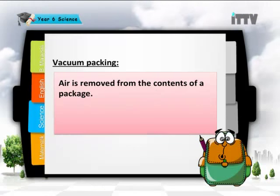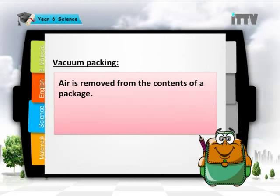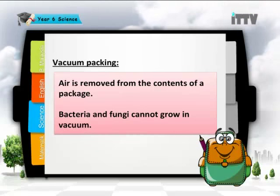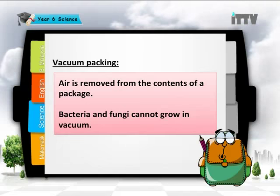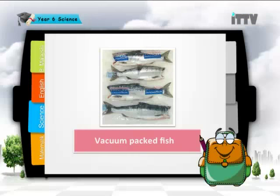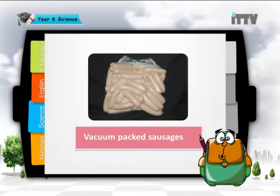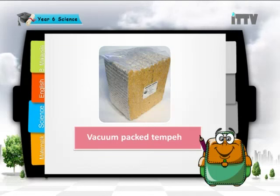In vacuum packing, air is removed from the contents of a package. The absence of air inhibits bacteria and fungi from growing, because there is no air for them. Bacteria and fungi cannot grow in a vacuum or absence of air. Examples of vacuum packed food include vacuum packed fish, vacuum packed sausages, and vacuum packed tempeh.